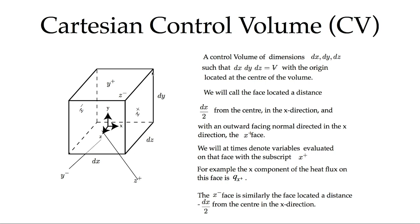The Cartesian control volume has dimensions dx in the x direction, dy in the y direction, and dz in the z direction. The origin is located at the center of the control volume, and the six faces are located an equal distance away from the origin. Moving a distance dx/2 in the x direction brings us to the x-plus face — the face with a normal in the x direction located at positive dx/2 from the origin. Moving backwards dx/2 gives us the x-minus face. Similarly, we have y-plus, y-minus, z-plus, and z-minus faces.